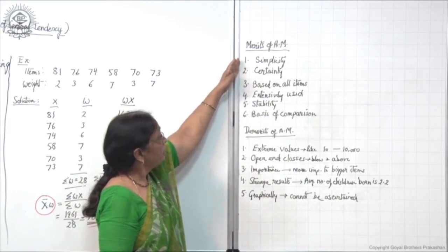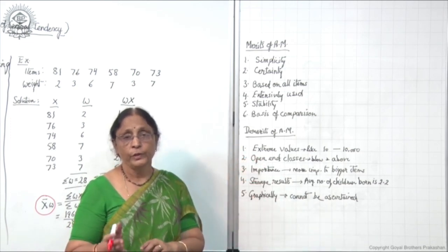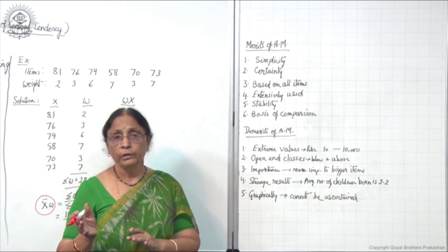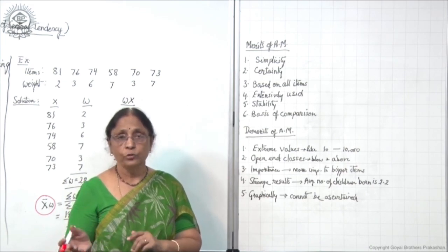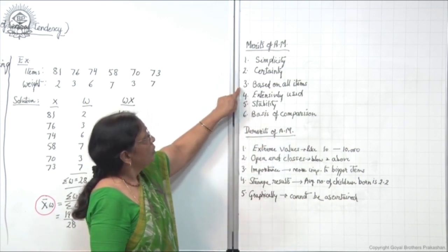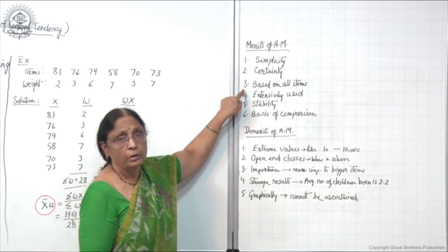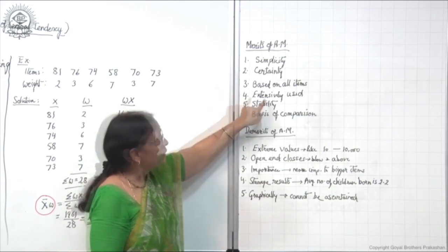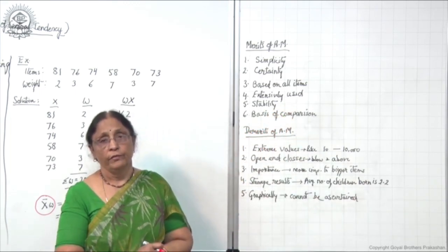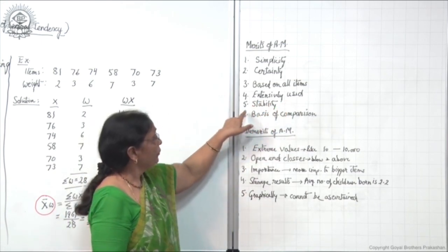These merits and demerits are on the basis of comparison with other types of averages — that means we are comparing with mode and median. Comparing to these two, arithmetic mean is more simple, more certain, and it is based on all items. The fourth merit is that it is extensively used — very popular and widely used.